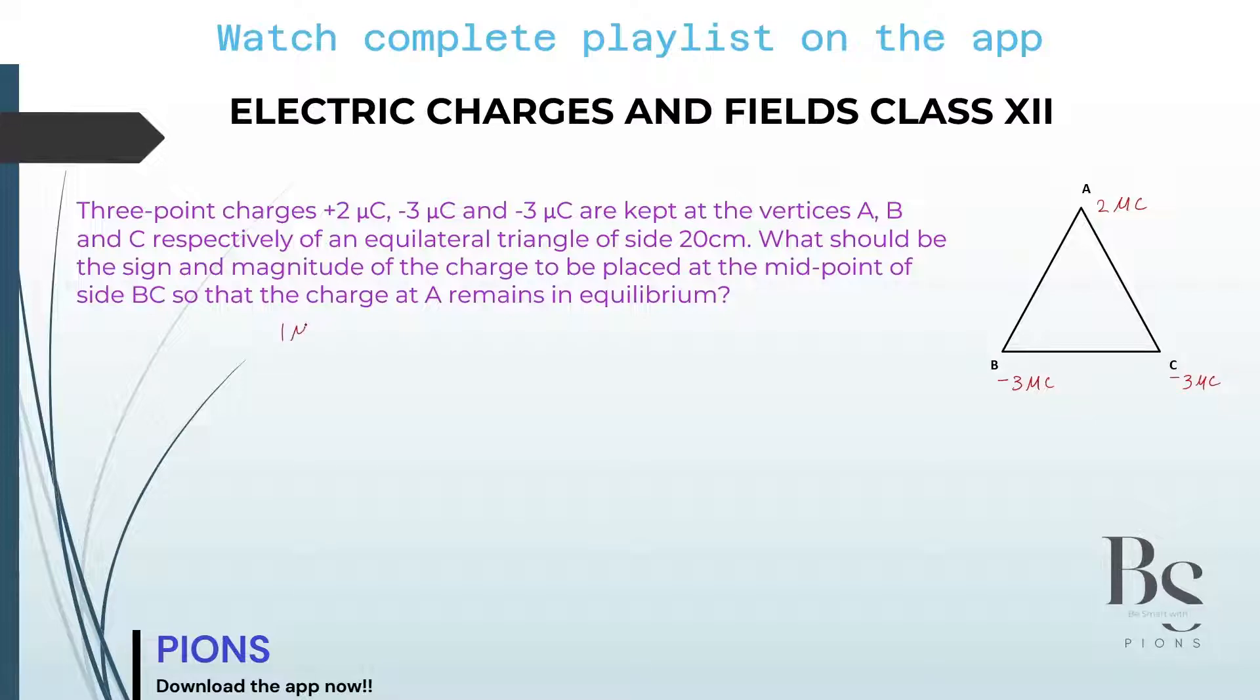One microcoulomb is 10 to the power minus 6 coulombs of an equilateral triangle of side length 20 centimeters. So what is each side of this equilateral triangle? 20 centimeters. What should be the sign and magnitude of charge to be placed at the midpoint of side BC? Midpoint means at this point, 10 centimeter away from B and 10 centimeter away from C. You are placing a charge over here such that the charge at A remains in equilibrium.